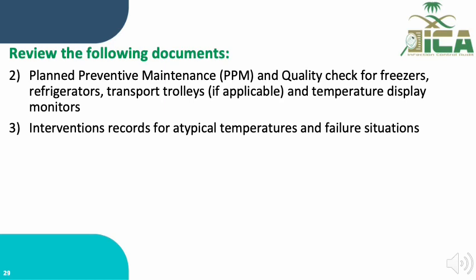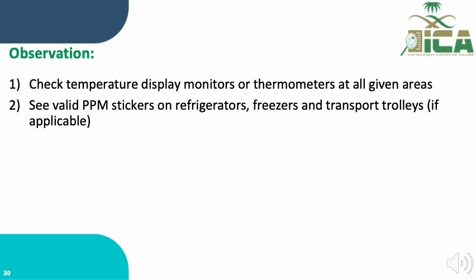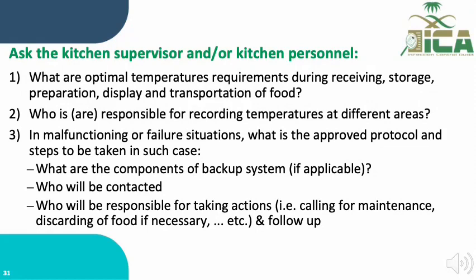Intervention records for atypical temperatures and failure situations must be documented and reviewed by the auditor. Observation requires checking that temperature monitors or thermometers are displayed at all given areas, and verifying valid planned preventive maintenance (PPM) stickers on refrigerators, freezers, and transport trolleys. Staff interview asks kitchen supervisor and personnel about optimal temperatures for each stage, who is responsible for recording temperatures, and the approved protocols for malfunctioning or failure situations.